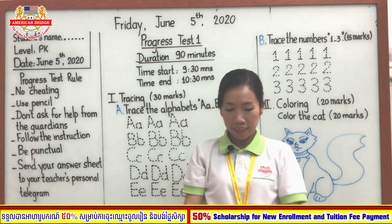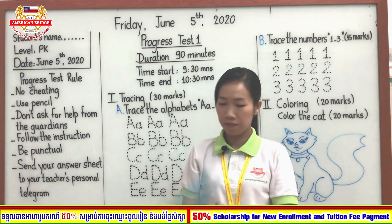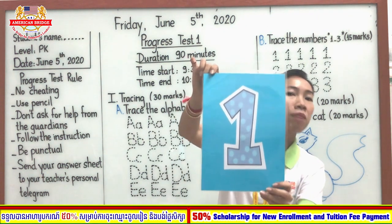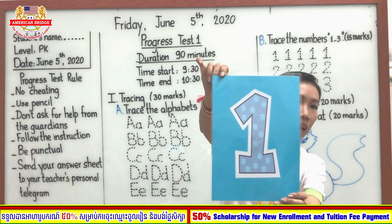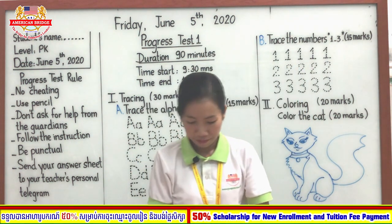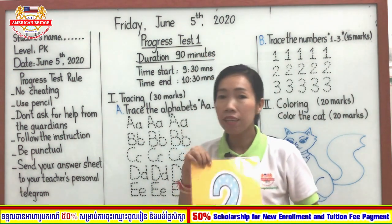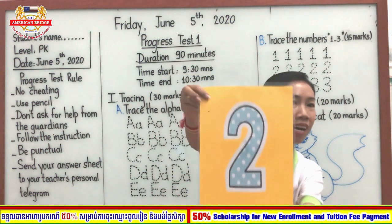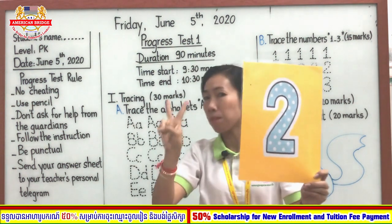Look at teacher. I want to ask everyone — first number. Yes, number 1. Say together: number 1. And here, what number? Yes, number 2. Say together: number 2.